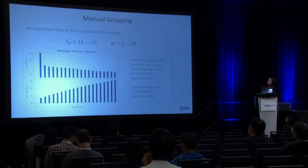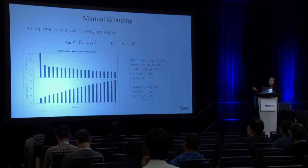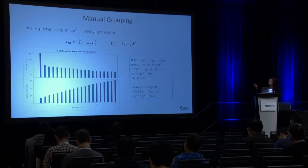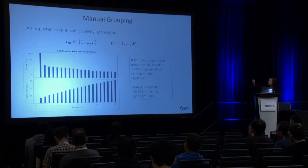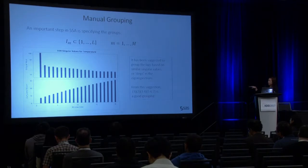The important step in SSA is how to find the groups. Here is a plot of the singular values identified during the decomposition step. To group them, you want to group similar singular values into one group. The first component is really distinct from others, so that forms the first group. The second component is also different from others, forming the second group. Components three and four have levels really close to each other, forming the third group. Five, six, and seven are also close, forming the fourth group. The rest are slowly decaying singular values, which we consider noise.